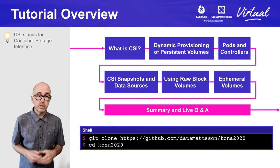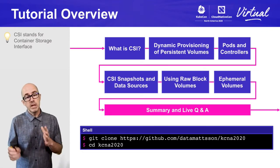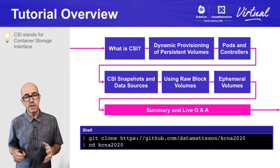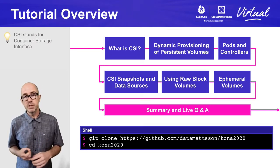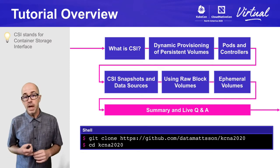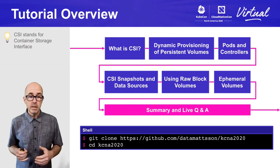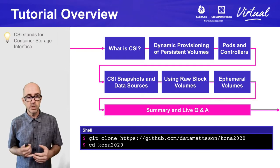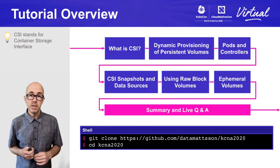This tutorial is all about CSI and what you can do with it in Kubernetes. I'll cover an introduction to CSI and some of the CSI drivers that are out there. The second part will cover dynamic provisioning of persistent volumes. I also want to talk about how pods and controllers attach to persistent storage, and then we'll get into CSI snapshots and using data sources in persistent volume claims to clone external storage into a new pod.